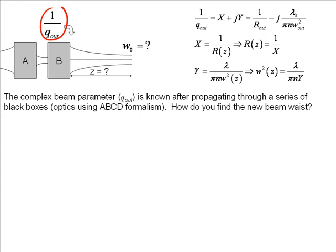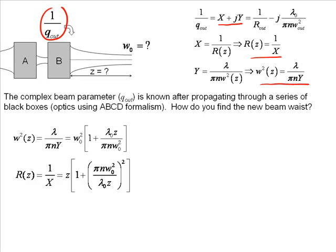The way we do it is we simply define 1 over q out as a real part and imaginary part. I'm calling it x plus j y, and I know that's equal to this. So I know that R(z) is defined by 1 over x. w squared of z is defined by that equation right there. I can rewrite my two equations that define the Gaussian beam parameters, the waist and the radius of curvature, like this.